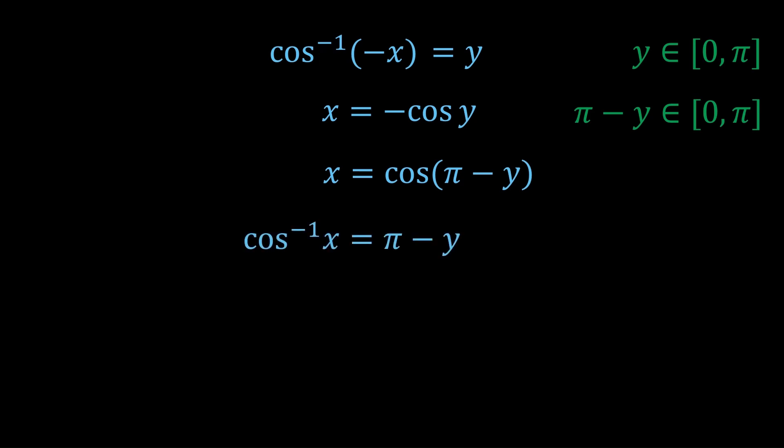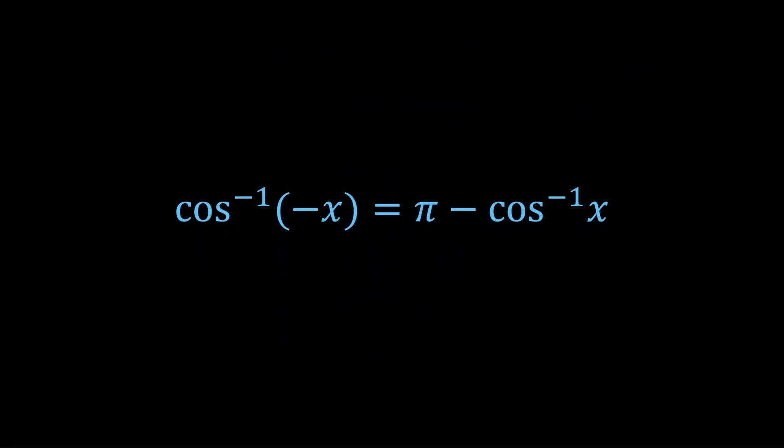If you didn't understand that, check out the video in the description on the problem with the trig functions. So cos inverse x equals π minus y. So y equals π minus cos inverse x. Substituting back for y, we get cos inverse minus x is π minus cos inverse x.